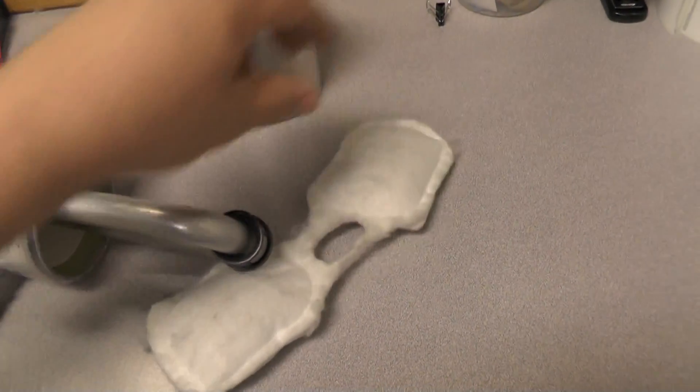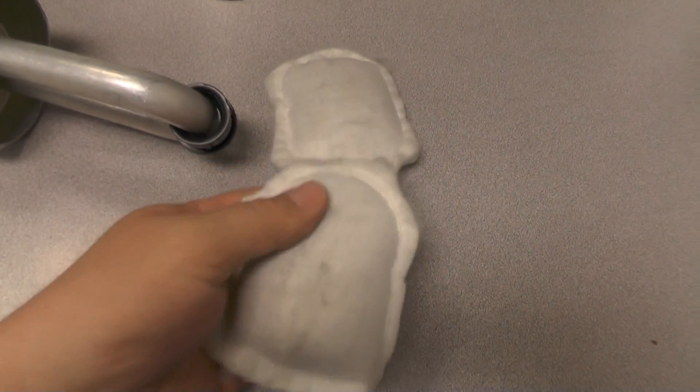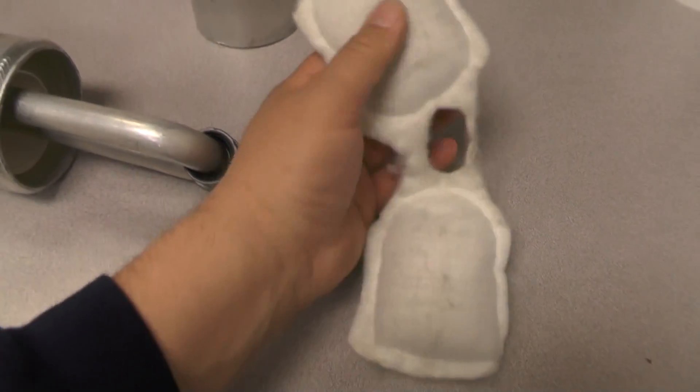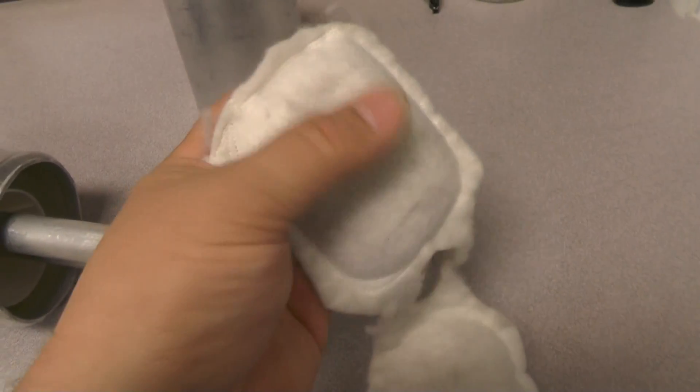This here is the desiccant bag. So inside of here are all the little desiccant beads that absorb moisture out of the refrigerant. You can hear them, right?